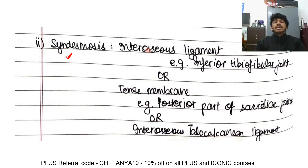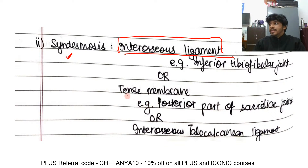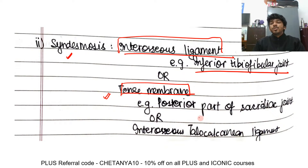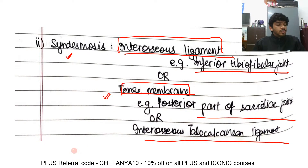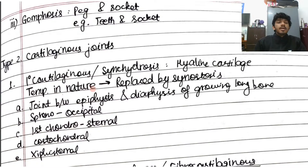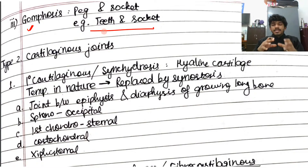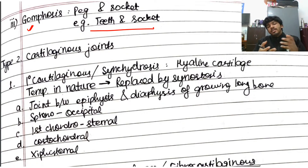One specific suture to remember is schindylesis — the joint between the rostrum of the sphenoid and the vomer. Next is syndesmosis: fibrous joints with an interosseous ligament or tense membrane between the bones. Examples include the inferior tibiofibular joint (interosseous ligament) and the posterior part of the sacroiliac joint or the interosseous talocalcaneal ligament (tense membrane). Gomphosis is a peg-and-socket fibrous joint — the classic example is the teeth in their sockets.